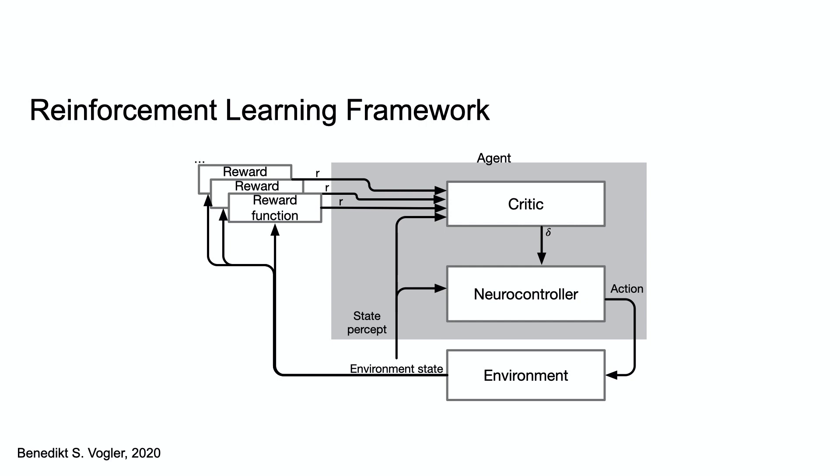The critic forms an internal representation of the reward using the state percept and memory. The internal representation of the reward is then fed to the neural controller, an actor which is constructed using neurons.